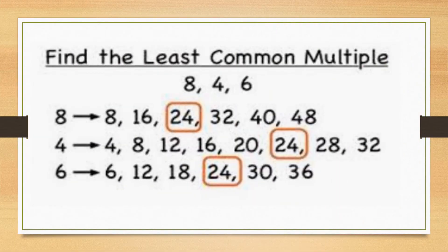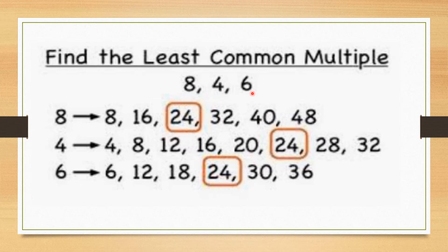Let's have another example: find the least common multiple of 8, 4, and 6. Step 1: write the multiples of each number — multiples of 8, multiples of 4, multiples of 6. Now find: can you find 8 in the tables of 4 and 6? Can you find 16? Can you find 24? Yes — 24 appears in the table of 4 and also in the table of 6. So LCM of 8, 4, and 6 is 24.